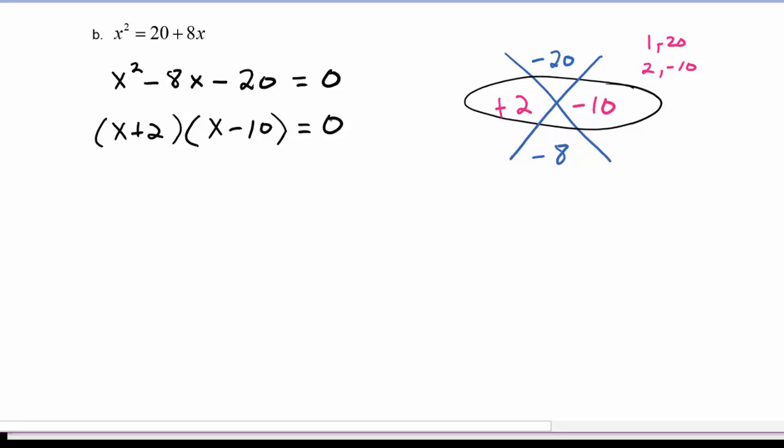Now we're going to make use of the zero product property, and we set each factor equal to 0. So x plus 2 has to equal 0, or x minus 10 has to equal 0. If we solve each one, the first one, we get x is equal to negative 2. Solving the second one, we get x is equal to 10.